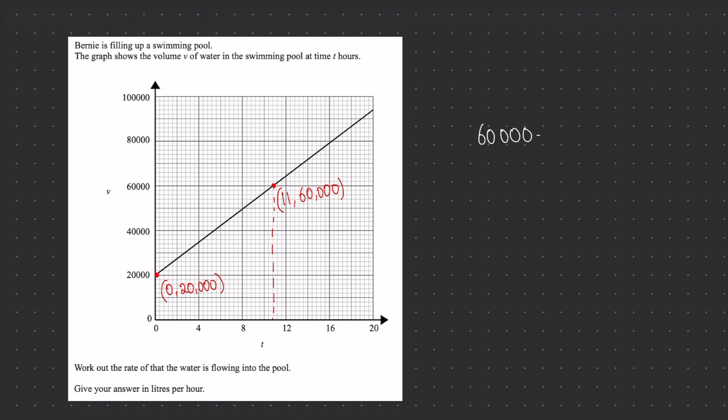So now using y2 minus y1 and then x2 minus x1, I'm going to be able to calculate the gradient. So 11 minus 0, we work that out to be 3636. And this is the important part that's easy to get wrong - the units. You can see that the units as the question suggests must be in liters per hour.